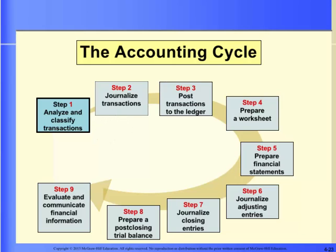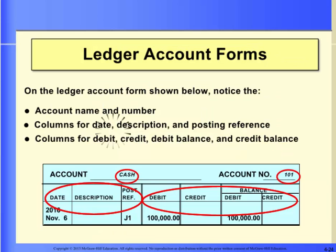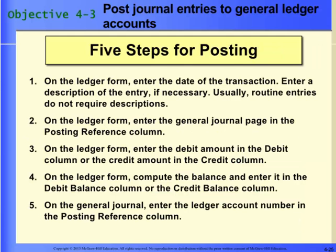Here are the steps in the accounting cycle. The accounting cycle is a series of steps performed during each accounting period to classify, record, and summarize data for a business and to produce needed financial information. The general ledger looks a lot like the general journal, but it has two additional balance columns. We will now post our general journal entries to the general ledger. Let's review the five steps of posting from the general journal to the general ledger.